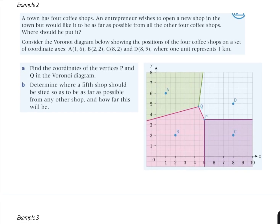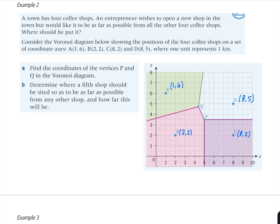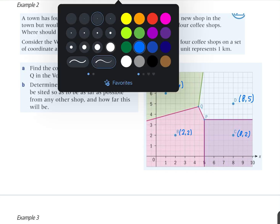Example 2: a town has four coffee shops. An entrepreneur wishes to open a new coffee shop but would like to be as far as possible from the other four. Consider the Voronoi diagram showing the positions of four coffee shops A, B, C, and D, where one unit represents one kilometer. Part A: find the coordinates of vertices P and Q. Whenever information is given in the question but not on the diagram, put it on the diagram first. Now let's find P — I'll start with P because it's the easiest one to find.